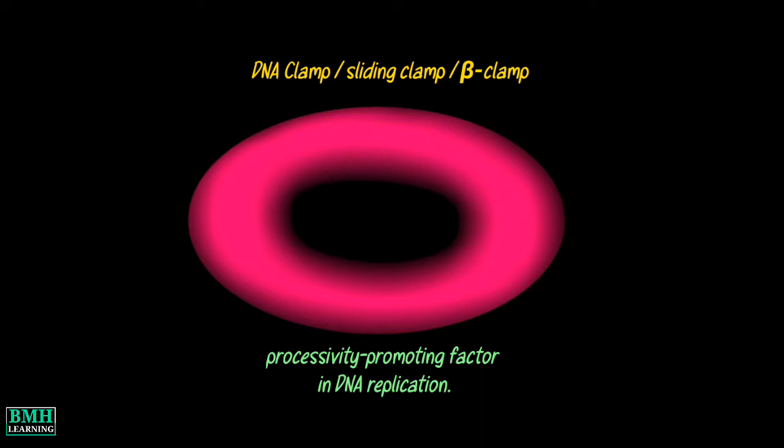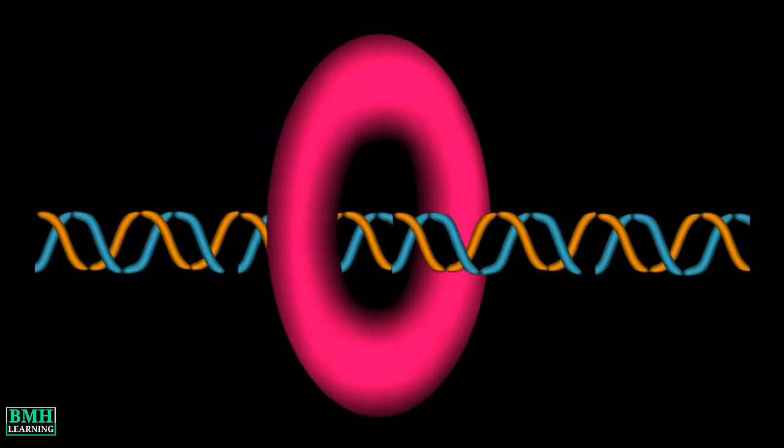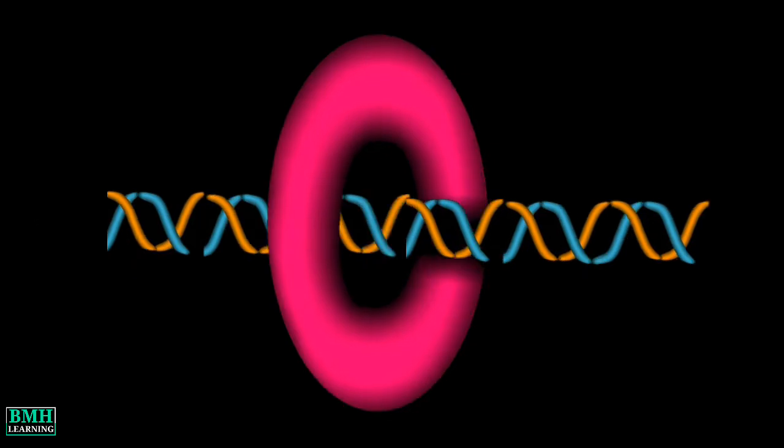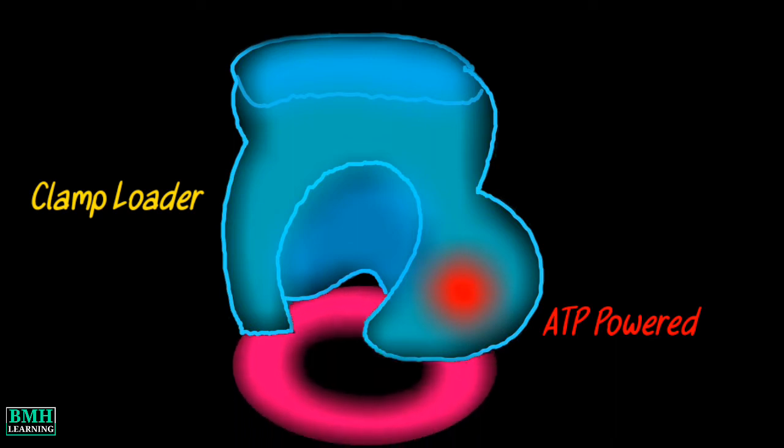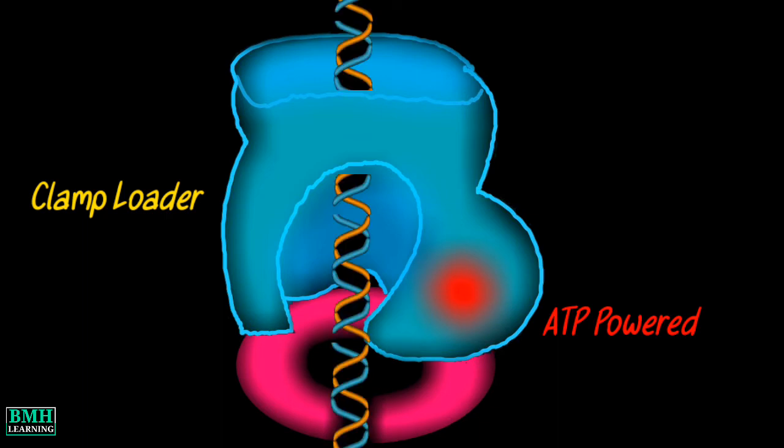Sliding clamps encircle the DNA. Many of the sliding clamps form tightly closed circles and must be forced open to allow the threading of DNA through the middle. ATP-powered clamp loaders perform the job of opening the clamps and placing them on DNA. These clamp loaders grab onto a clamp, open it up, and allow the DNA to bind inside.